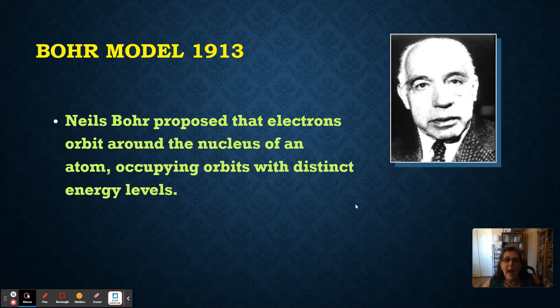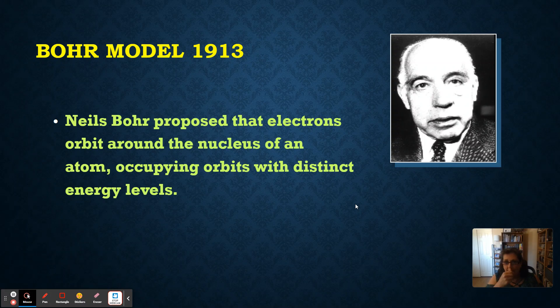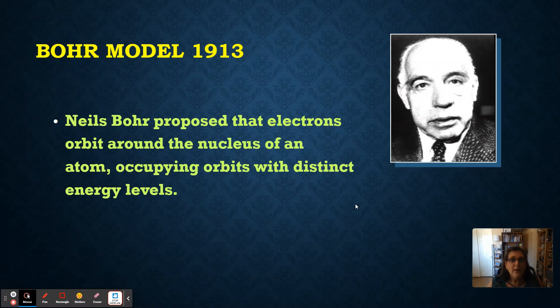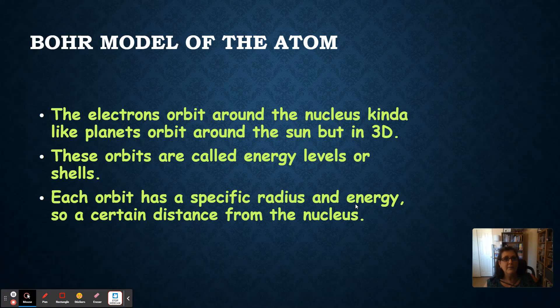So, electrons are outside of that nucleus going around really fast, and that they have distinct energies associated with them. So, we say these orbits are called energy levels.